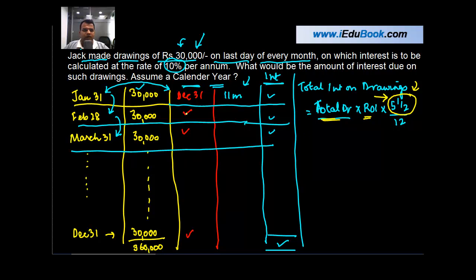The first drawing you used for 11 months. The second drawing, how many months did you use it? You used this for 10 months, February 28 until December 31. Similarly this one for nine months, then eight, seven, six, five, four, three, two, one, and the December one for zero months.